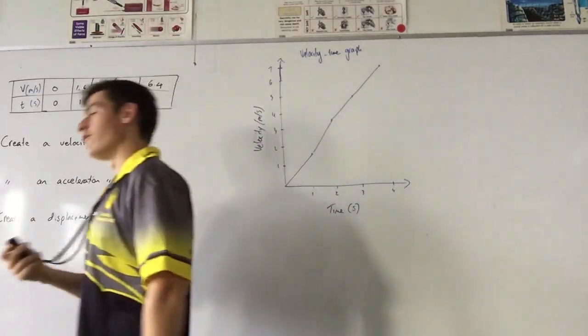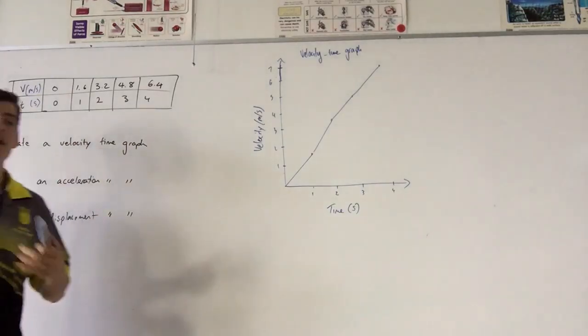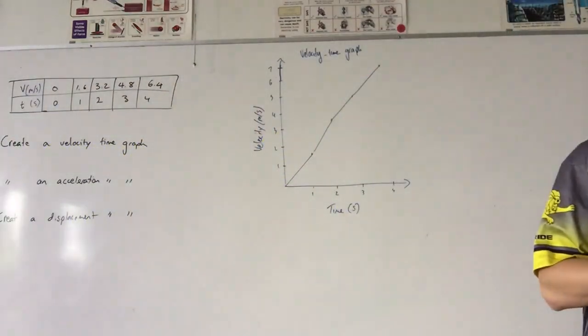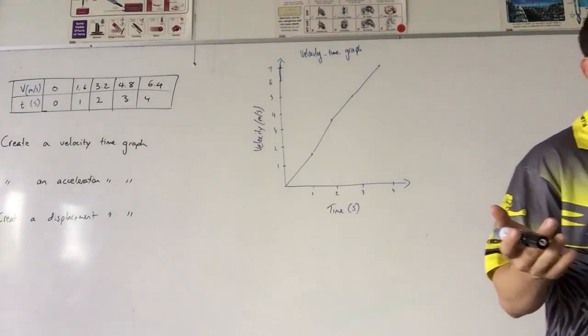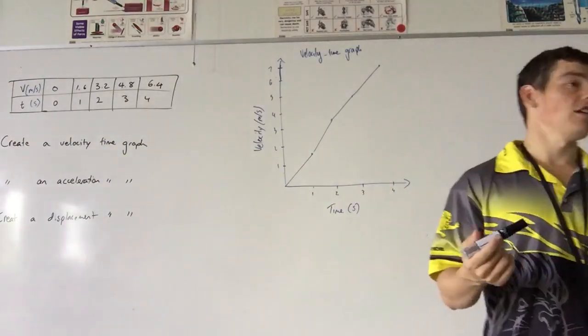Not the most challenging component of this. What's the challenging component? Finding the gradient. Why do we need to find the gradient? You're right, we need to find the gradient. Why though? So we can work out acceleration. Because question 2 says create an acceleration time graph. Now, because the gradient or because the values of this linear graph don't change between 0 to 4 seconds. Do they change at all? No. It's going up by the same amount every time, isn't it? I can pick any two points.